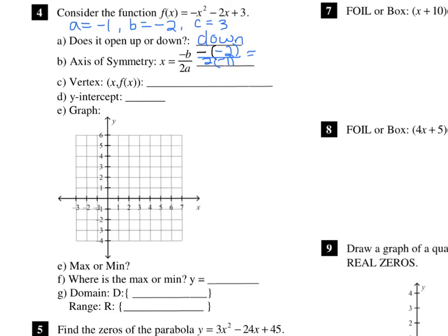For number 4, I've written down A, B, and C. A is negative 1, B is negative 2, and C is positive 3. Because A is negative, it opens down. I'm plugging B and A into the axis of symmetry formula, so I have negative negative 2, which on top is going to be positive 2. On the bottom I have 2 times negative 1, which is negative 2. And 2 over negative 2 is negative 1.